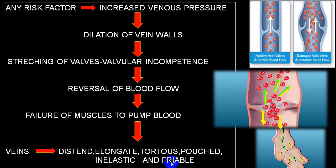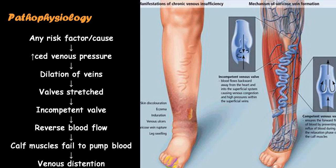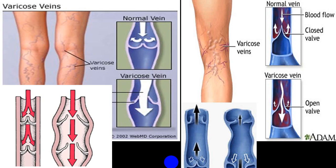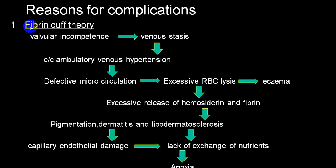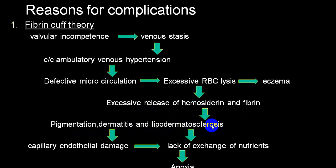There is a fibrin cuff theory: due to venous incompetence, stasis, and hypertension, defective microcirculation and excessive RBC lysis result in eczema, excessive release of hemosiderin and fibrin causing pigmentation and dermatitis, and changes called lipodermatosclerosis. Capillary endothelial damage results in lack of exchange of nutrients and hypoxia.